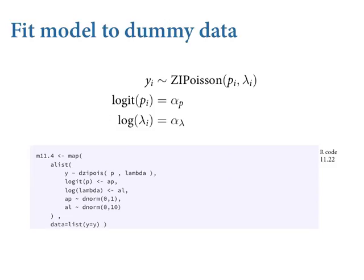Now let's look at the model. This model is simpler — I'm not going to put any predictors in it, but you add those as regular linear models with all your previous tricks. You put this into MAP exactly as you'd expect. 'dzipois' is a likelihood function — a density function I programmed into the rethinking package. There's a box in the notes where I show you what its guts look like, in case you ever want to write your own likelihood function — it's not that hard.